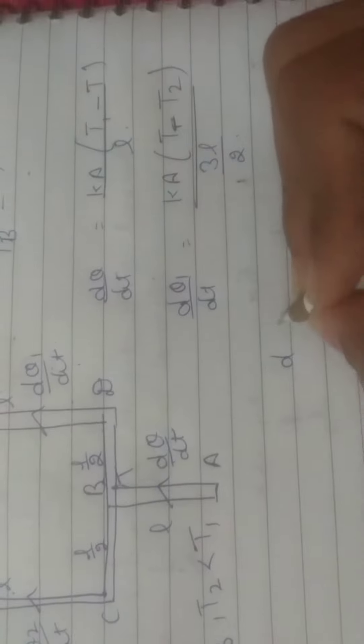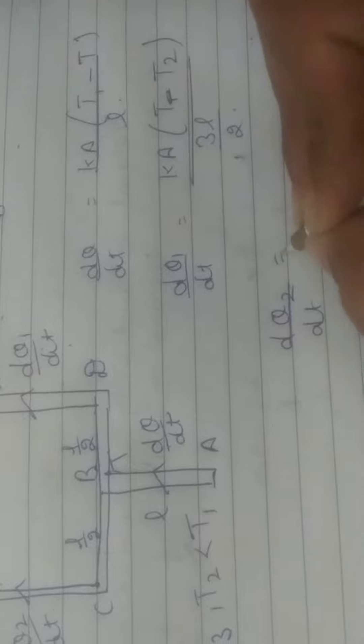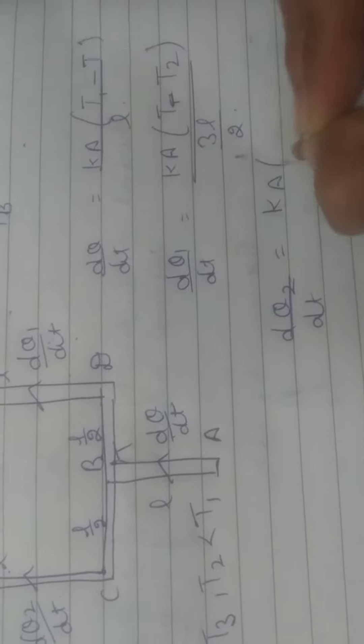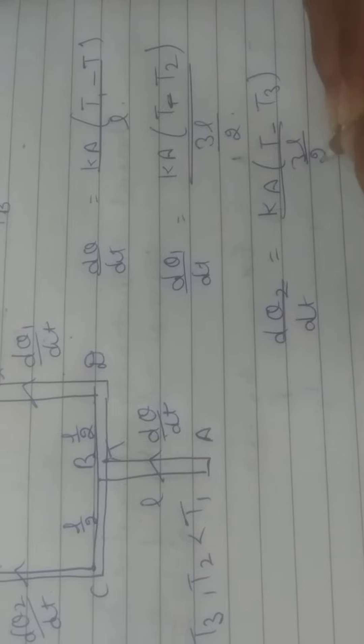DQ2 by DT equals K times A times (T minus T3) divided by 3L by 2.